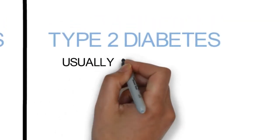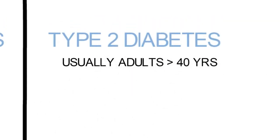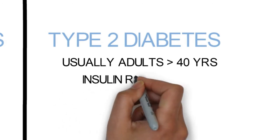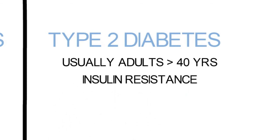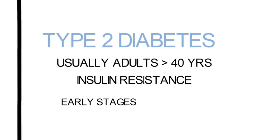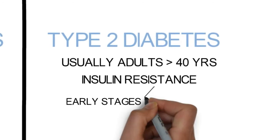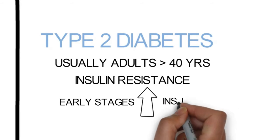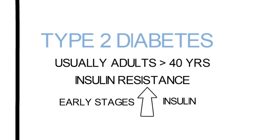Type 2 diabetes is seen in individuals more than 40 years of age and develops due to resistance of the action of insulin rather than a deficiency of insulin. In fact, in the early stages of the disease the body may produce more than normal amounts of insulin to compensate for the insulin resistance. Insulin resistance means that insulin does not act on the tissues in the way it's supposed to act.